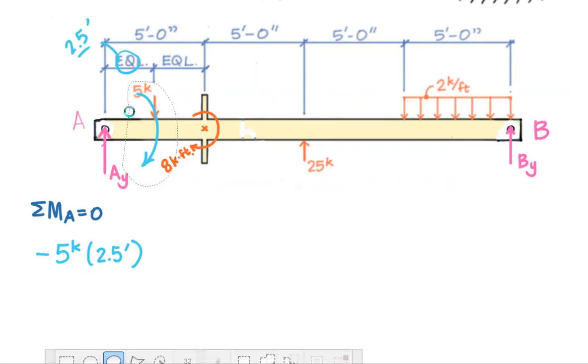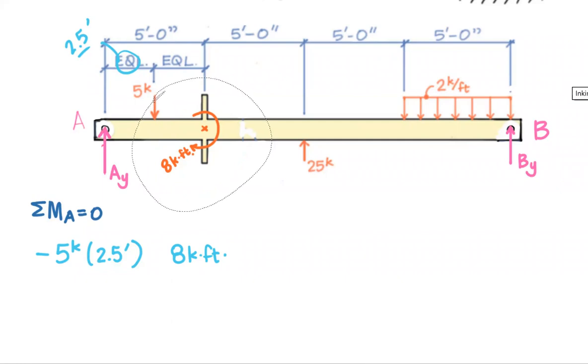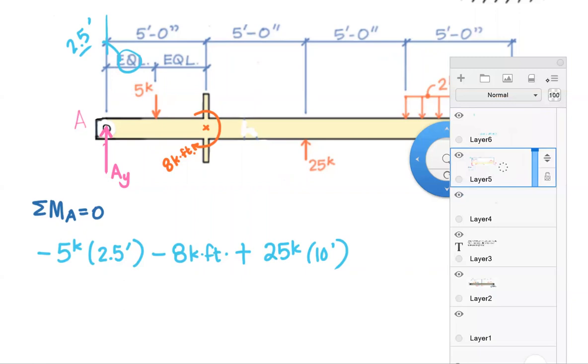So five kips times 2.5 feet. That one with respect to A is a clockwise or negative rotation. Next term. My eight kip feet. I've already got kips times feet as units. So I do not need to multiply that times something. Sometimes students want to multiply it by five. But that is not how that works. And here we just observe that that is a clockwise vector and give that a minus sign as well.